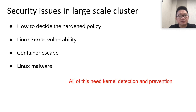These are the four major kinds of security issues we want to resolve. We want to detect the default hidden options of the Linux kernel and mitigate Linux kernel vulnerabilities. We also want to detect and prevent container escape and Linux malware. All of these require kernel detection and prevention.